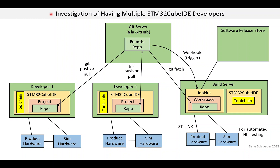The final topic is having multiple STM32CubeIDE developers. So far we have really just focused on a single developer. In this picture — a lot like the other pictures you've seen, except now we have a second developer — we see several copies of the repo. The official one is up in the Git server. Jenkins has a copy of the repo, sort of a read-only version. And then the developers have copies of the repo, which they are potentially changing simultaneously and at various times pushing back up to the remote repo.